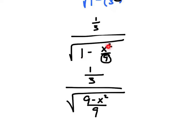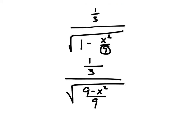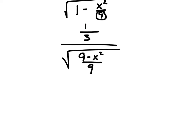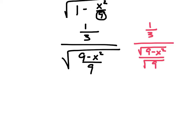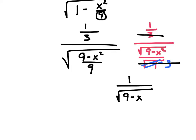Now we add the denominators underneath the radical: 1 is really 9/9, so we get 9 minus x² all over 9. I can split the radical into the square root of (9 minus x²) over the square root of 9. The square root of 9 is 3. The denominators match — the 1/3 on top and the 3 on bottom cancel — giving 1 over the square root of 9 minus x².